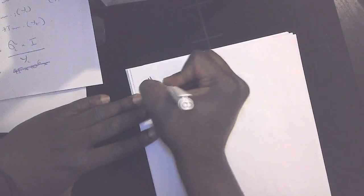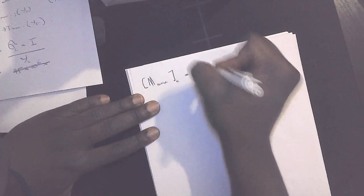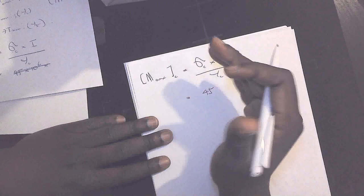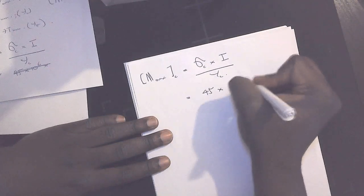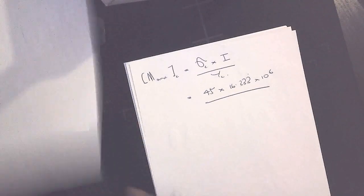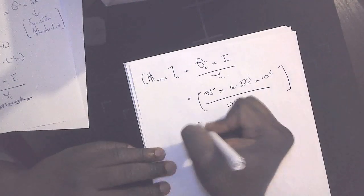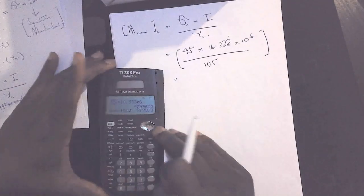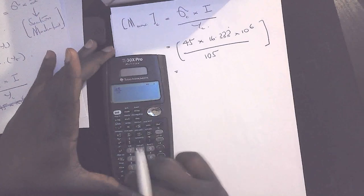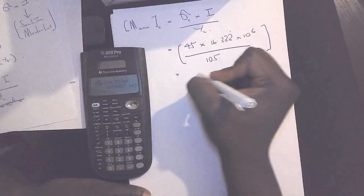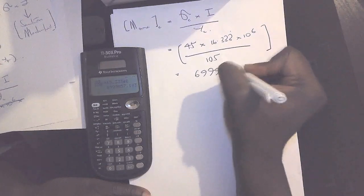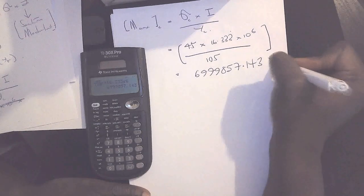So the maximum bending moment with respect to the compressive stress will be sigma C times I divided by Y C. It's equal to 45 because we've given the compressive stress, the maximum compressive stress is 45 MPa, which is the same as 45 newtons per millimeter squared, times 16.333 times 10 to the power 6, all divided by Y C, and Y C we worked that out to be 105 millimeters. So if we bring in our handy calculator, we've got 45 divided by 105 times 16.333 exponent 6.